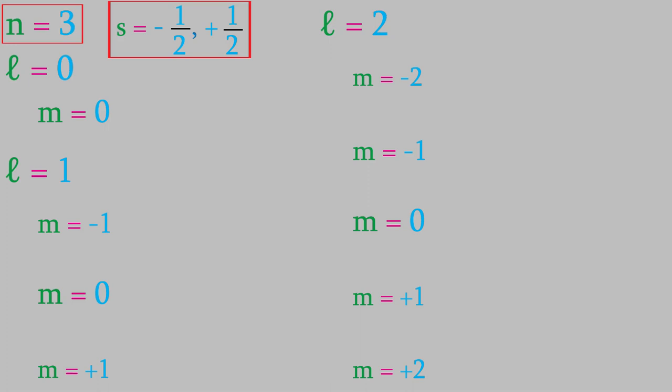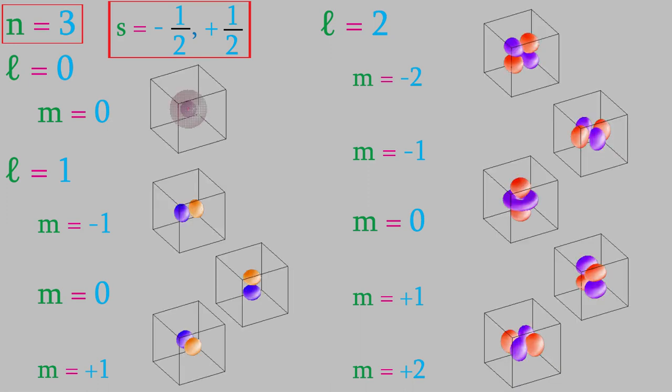Remember, each value of L has a different shape. In this case, they're either S orbitals, P orbitals, or D orbitals. Also, each value of M has a different orientation. Here's what each of these combinations would look like. Notice that the value of S has no effect on what the orbitals look like. So both the S equals minus one-half and positive one-half electrons can be in the same orbital.